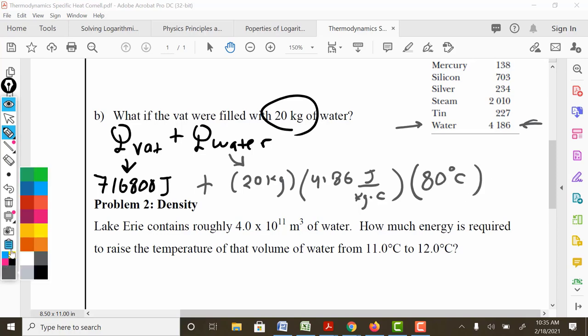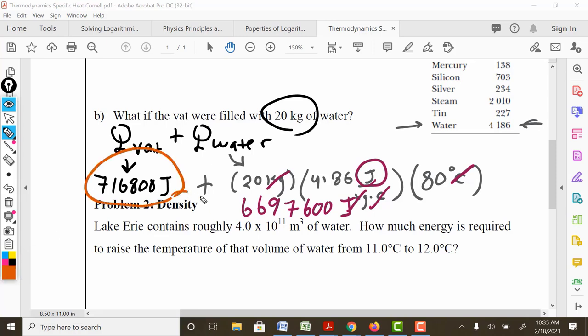Once again, notice how effortlessly these units cancel out, leaving you the joules. This whole term ends up becoming a rather large number, 6,697,600 joules. And when I combine that with the heat required to heat the vat, we get a total of 7,414,400 joules.